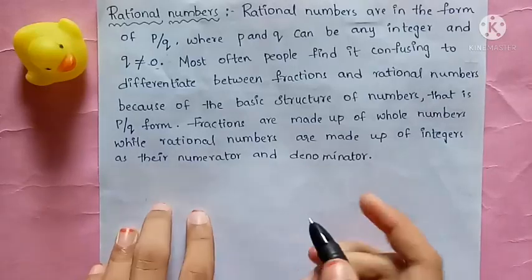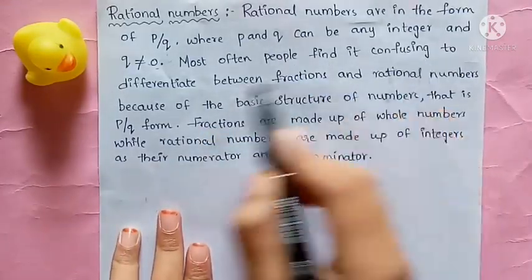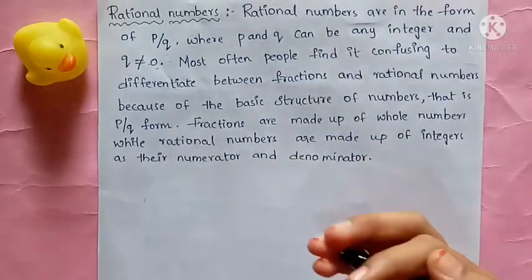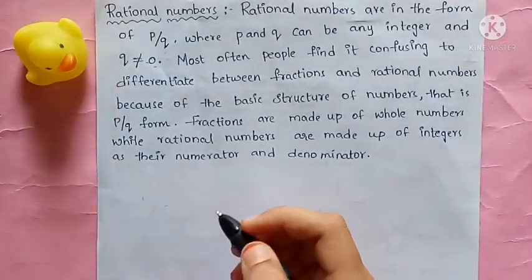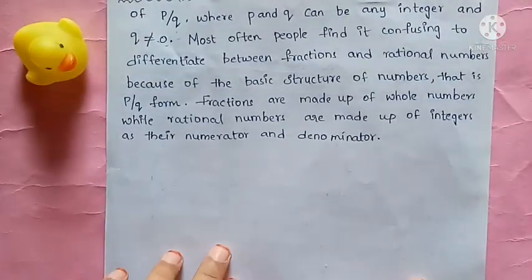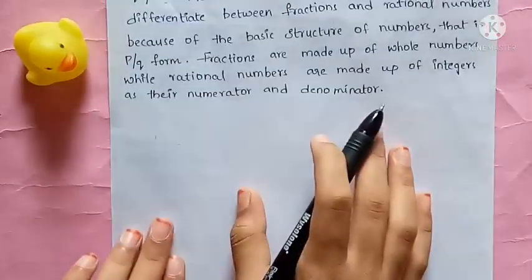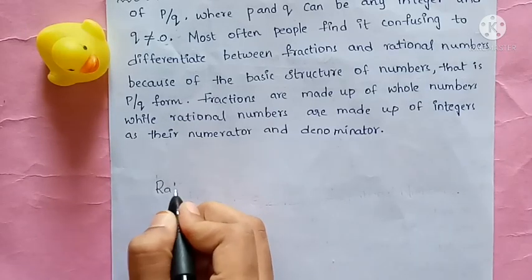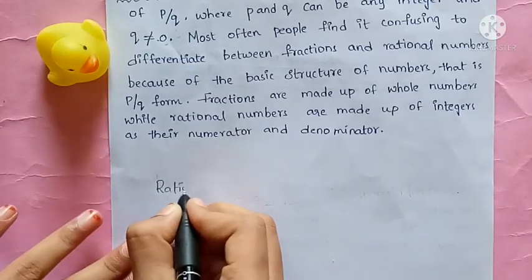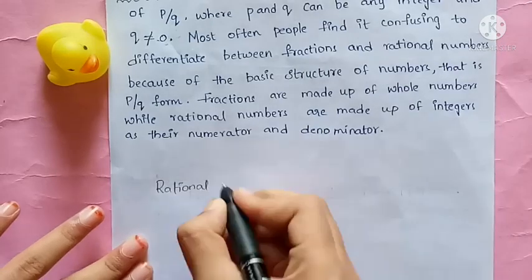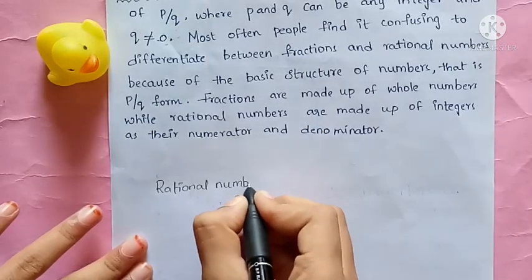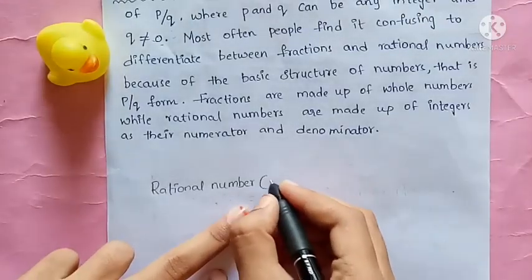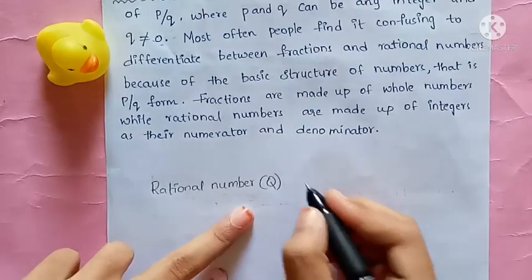Most often people find it confusing to differentiate between fractions and rational numbers, so we are going to see the difference. Rational numbers are denoted with Q. They are always in the P by Q form, where P and Q belong to Z — meaning P and Q are integers.